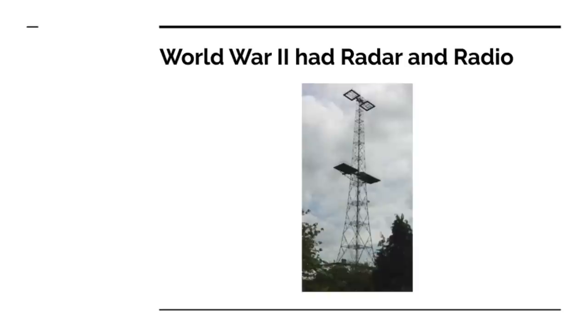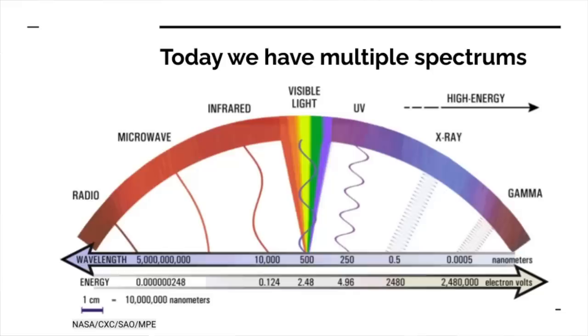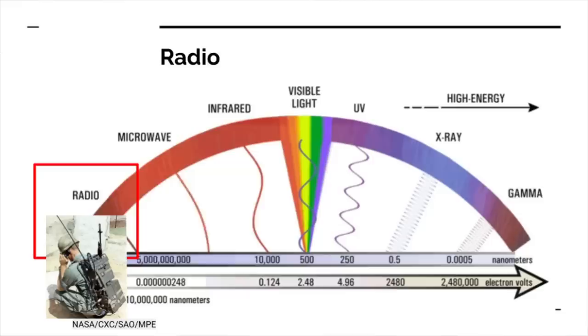By World War II, radar came into play, which added new things to worry about on the spectrum. You also had radio, which allowed units to communicate but also gave away your position if the enemy was listening and allowed the enemy to pinpoint your location. Today we have multiple spectrums to worry about — your radio signal can still be intercepted and triangulated, but we also have infrared and thermals that can see through some types of concealment and are easily forgotten because they're not visible.